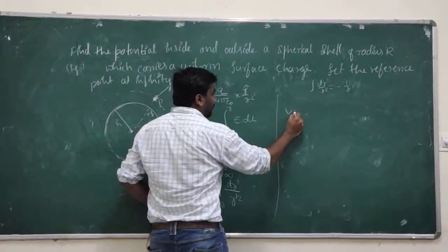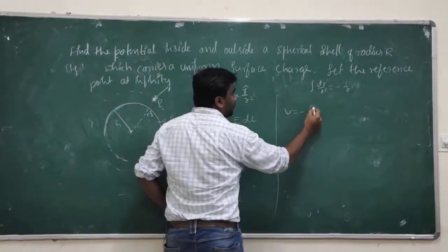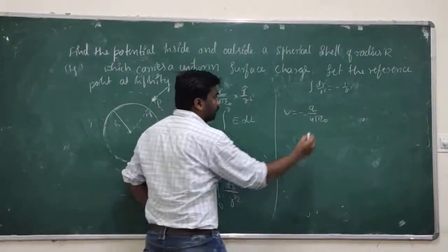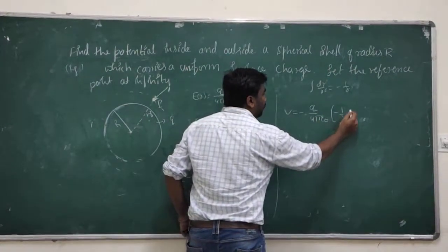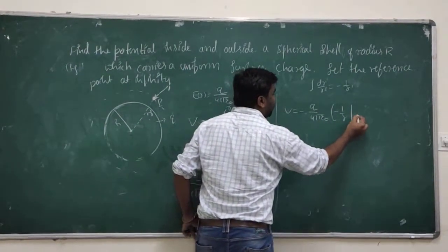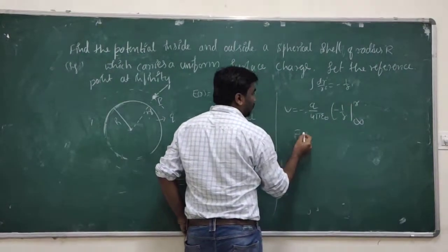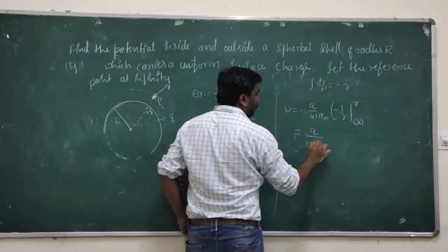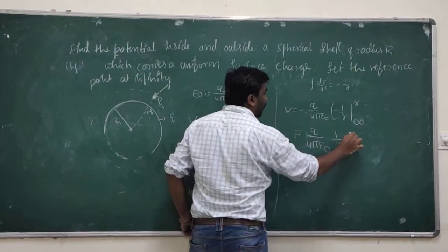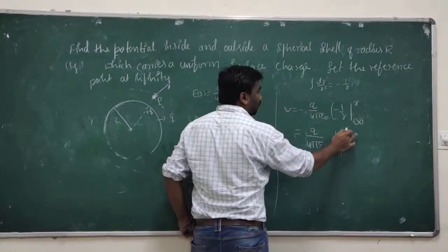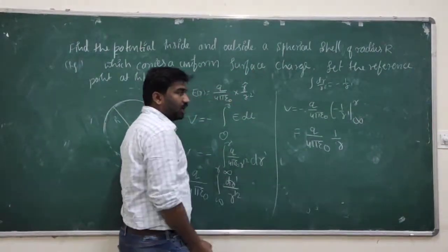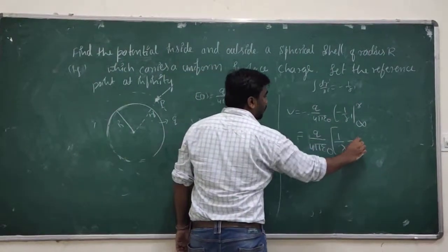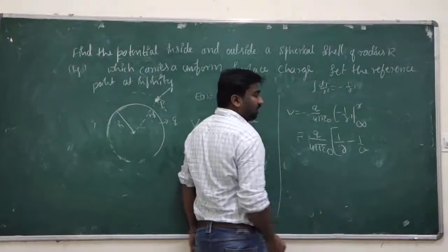So we will get V equal to minus q divided by 4 pi epsilon r, into minus 1 over r, bringing from minus infinity to r. That gives minus times minus, which is plus, so V equals q divided by 4 pi epsilon r, into 1 over r. Applying upper and lower limits: minus 1 over infinity equals 0.